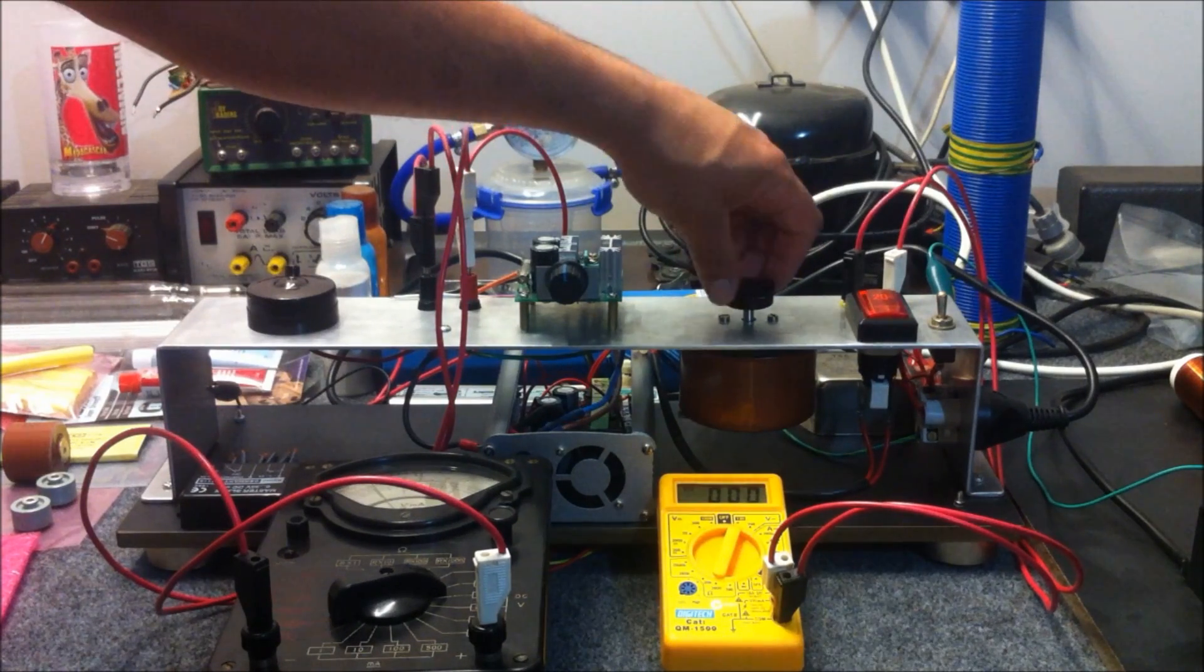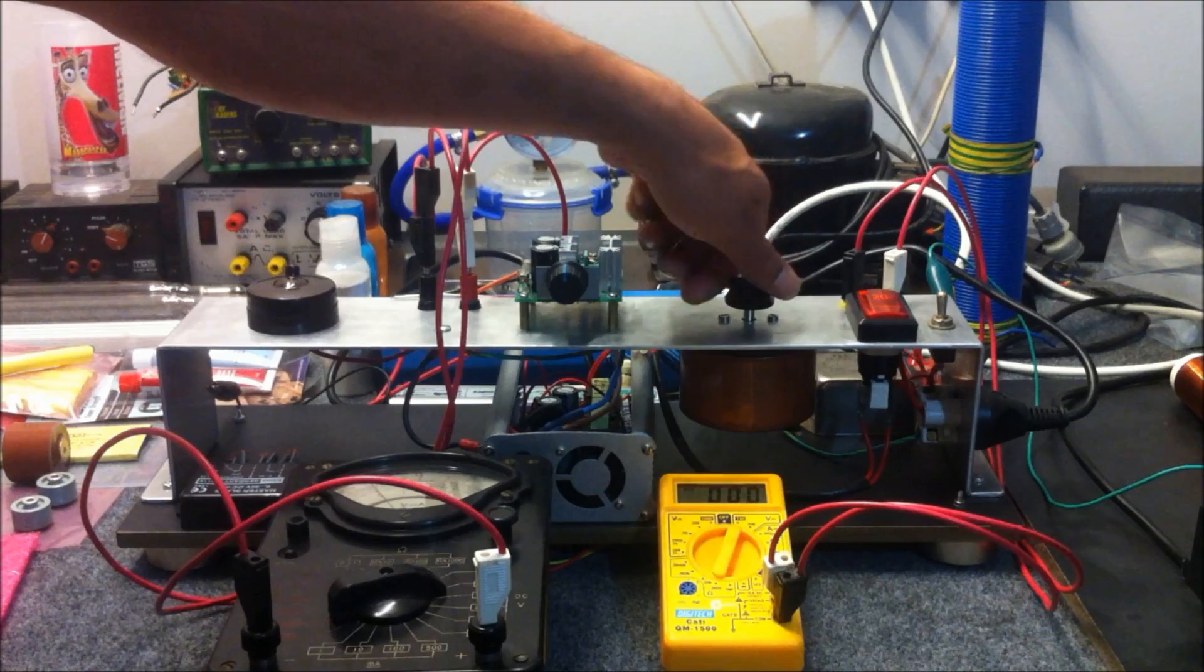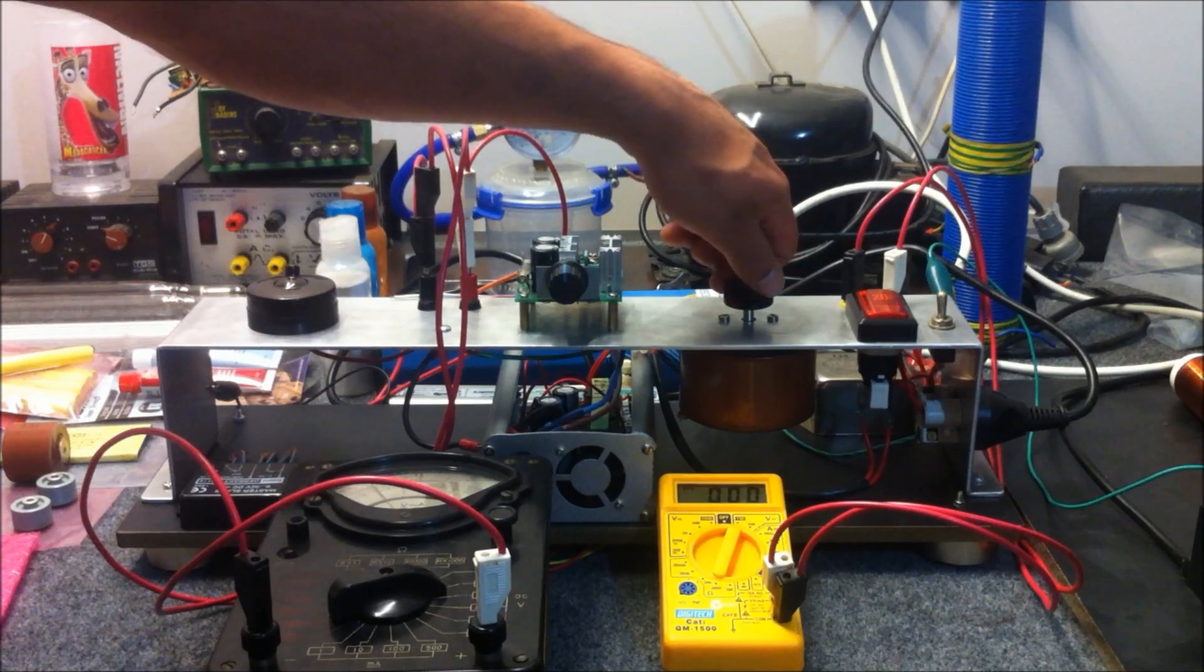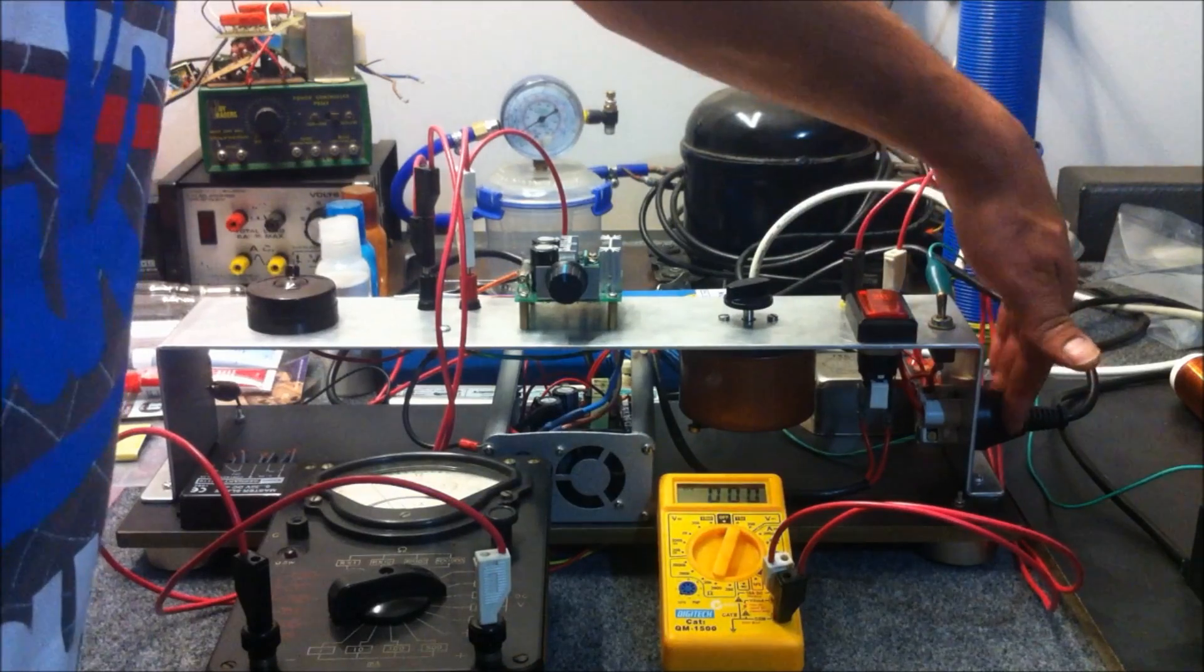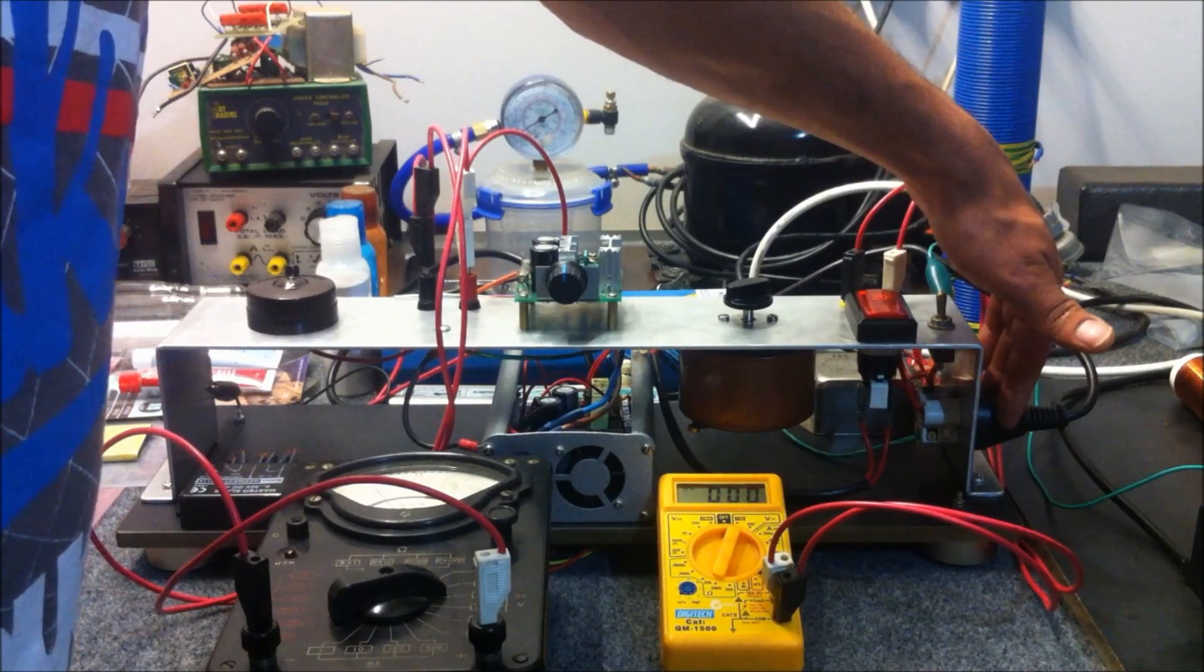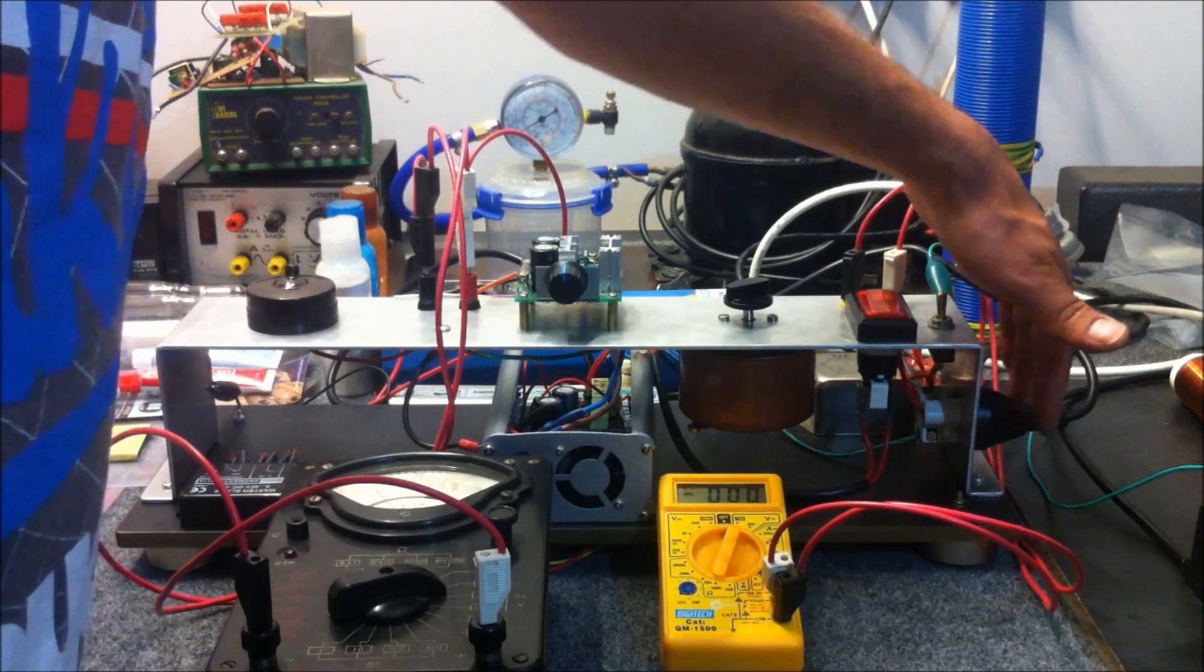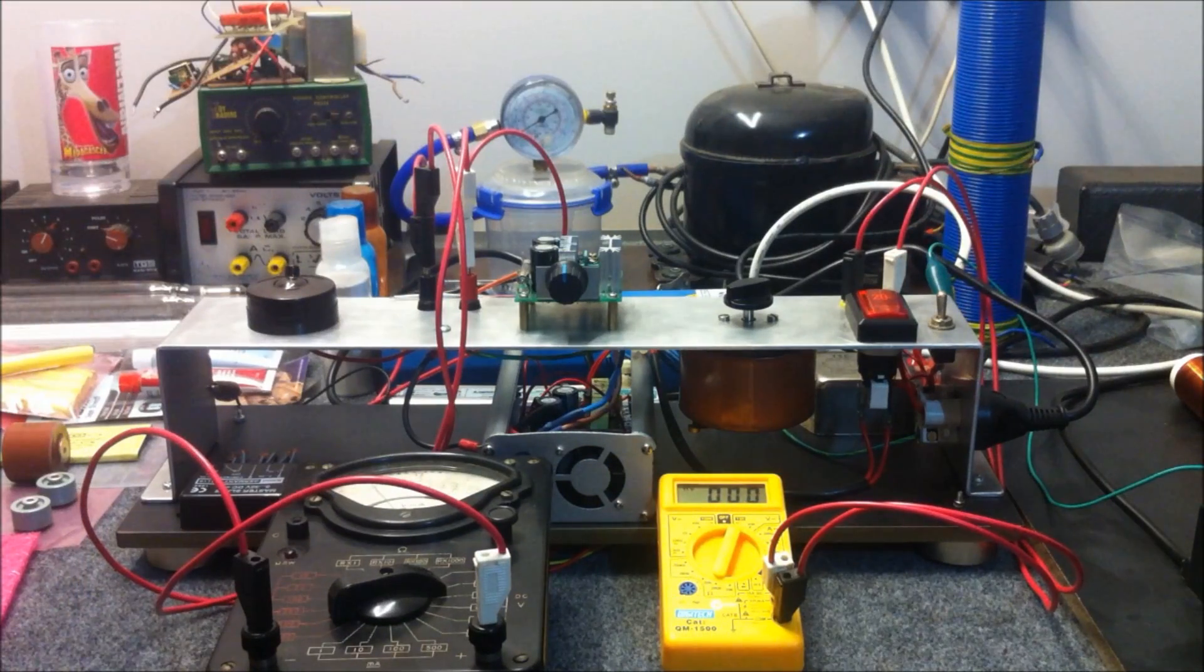It also goes through this variac here to allow us to control the voltage on the output terminals. The output terminals are here and we also have a standard 240 volt wall plug on the output mounted on the side as well.